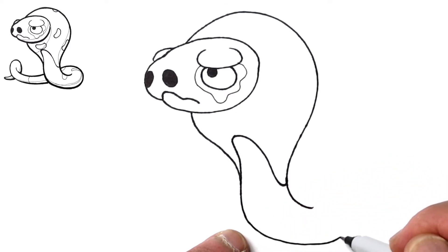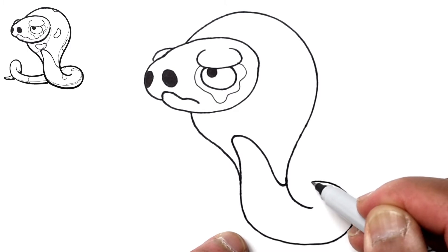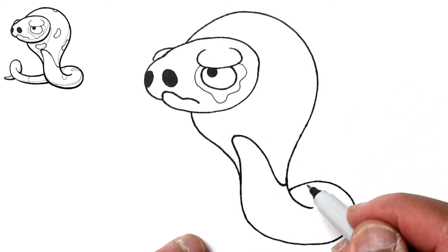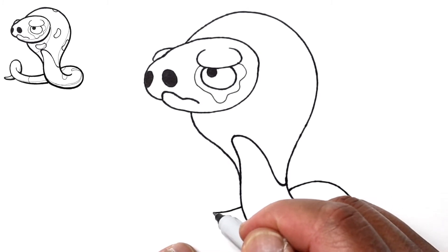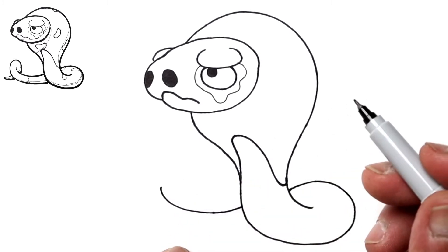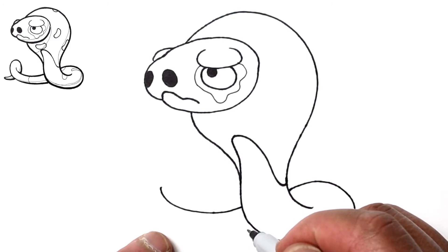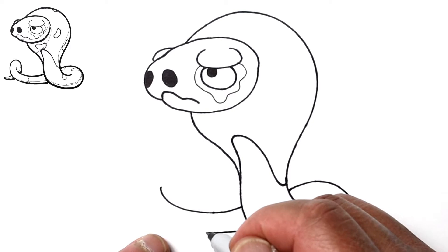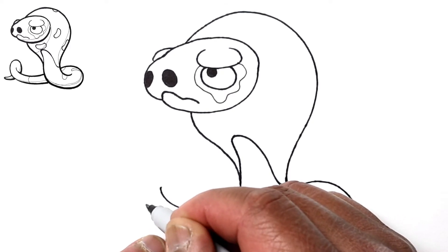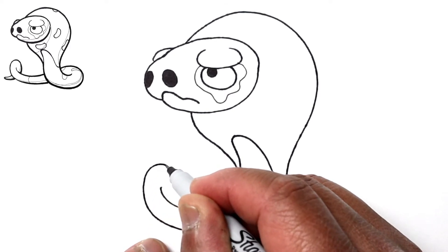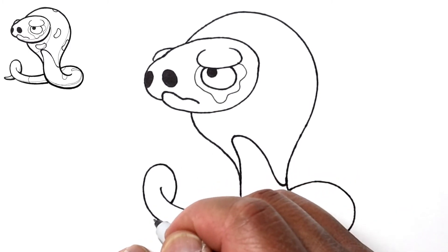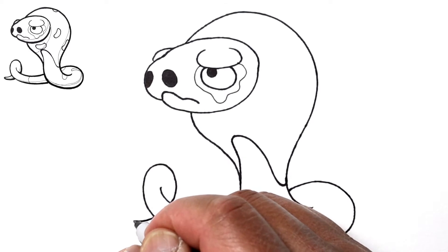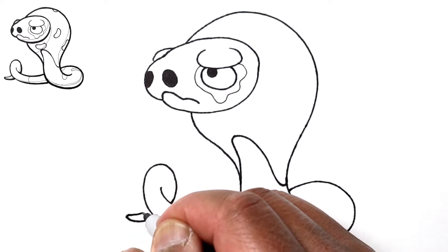We'll continue this line then behind the neck and then up and curl over just like what we did here. Go behind and then it'll finish to a soft point.